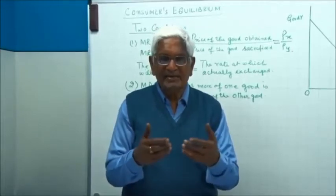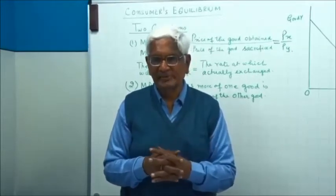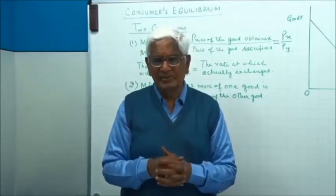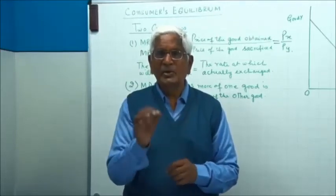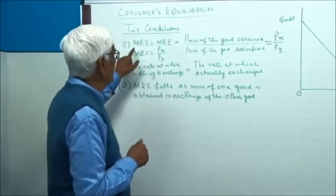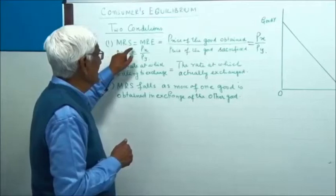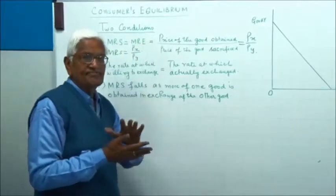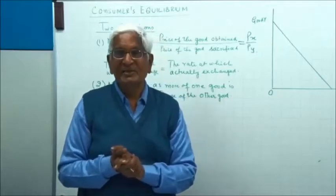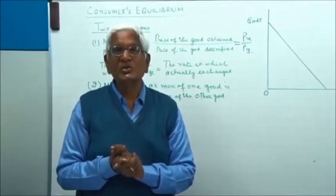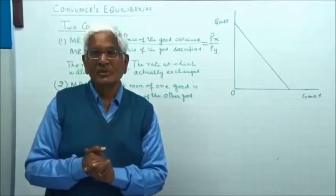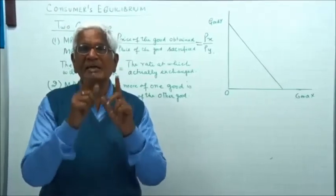What does this explanation mean? This will come in many other topics. Explain means you have said a consumer will be in equilibrium when MRS is equal to MRE. The explanation is: suppose MRS is not equal to MRE, what will happen? Why will a consumer not be in equilibrium?